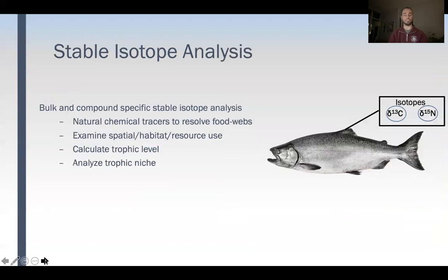The main tool here is stable isotope analysis. We don't have time to delve into the details, but a quick overview is that these are natural chemical tracers that are used to resolve food webs. They can examine spatial habitat and resource use, and we can use them to calculate trophic level and analyze trophic niche.